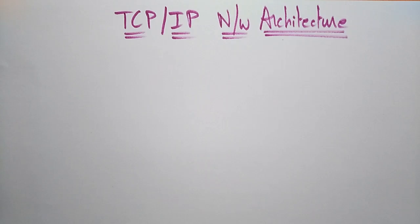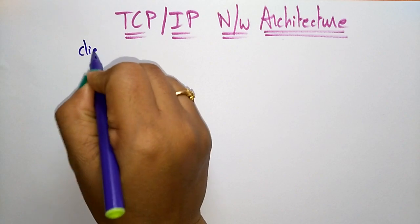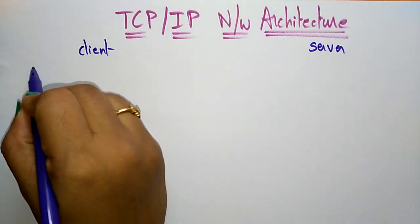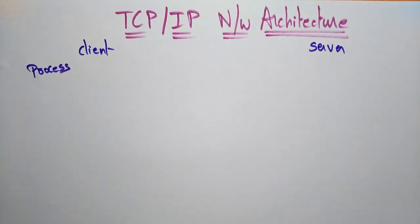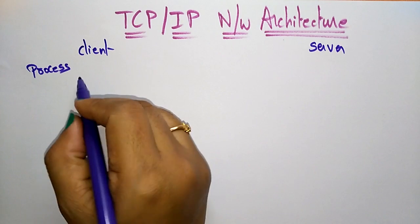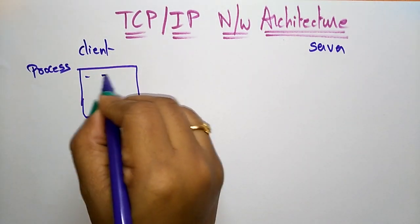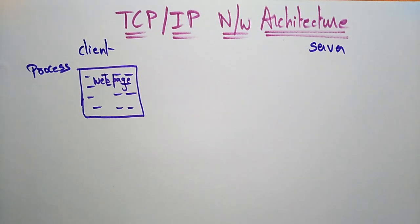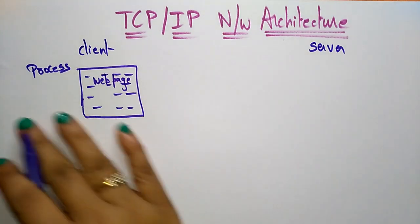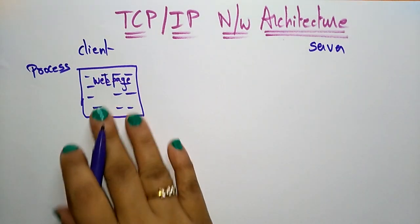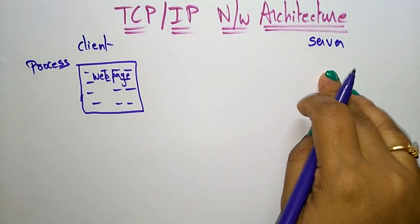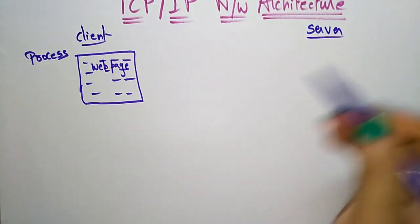Welcome back. Let us see the TCP/IP network architecture. Suppose this is a client site and here the server site — one host and another host. The starting point is a process. I'm the user, the client, and I open a web page which has some services. I want to upload my photos or update my record. Whenever I need to update my record, that request has to go to the server — for example, changing settings in Gmail. That is done with the help of TCP/IP.